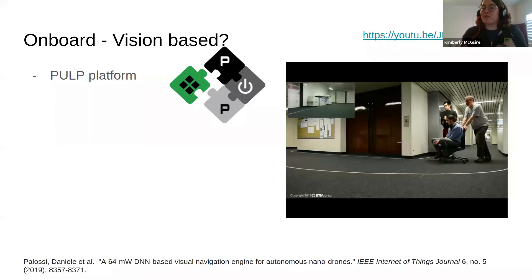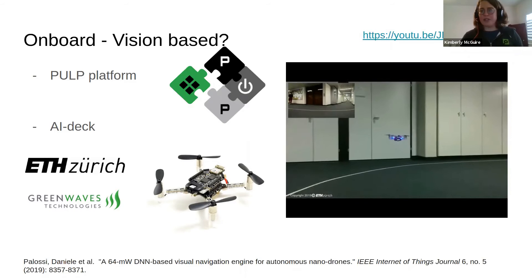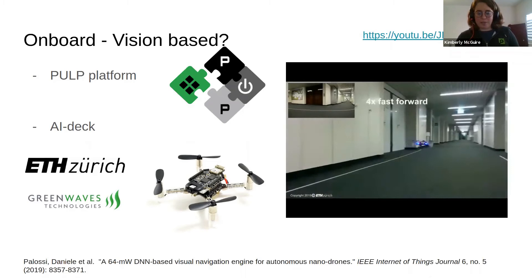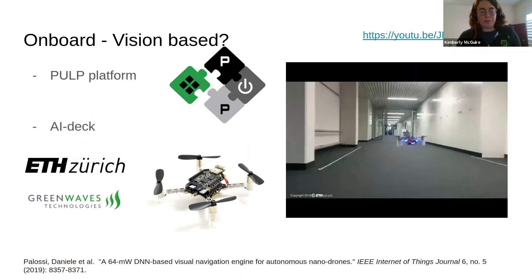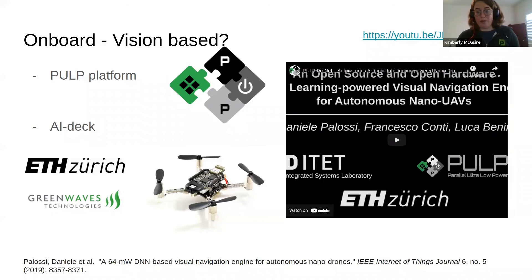Also very interesting is the Pulp platform — work where they were able to navigate based on vision alone, using a special board with an AI chip that can run a deep neural network to see where a path is and where obstacles are. It doesn't give an X, Y, Z directly, but it opens the possibility for a fully onboard vision-based positioning framework. Together with ETH Zurich and GreenWave Technologies, Bitcraze made the AI deck — currently working on getting it out of early access. During BAM Days, people from GreenWave gave a talk about it.